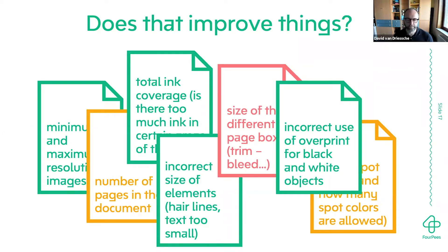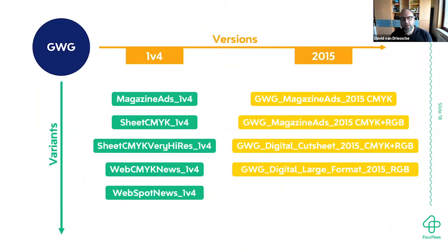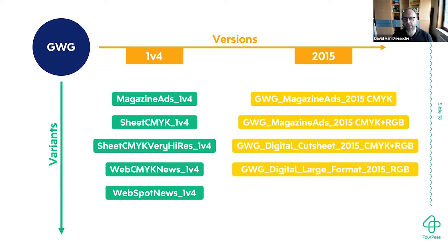Just as PDF/X has many different versions, so does the Ghent Workgroup specification — and it's actually more complex because there are different versions AND different flavors for different market segments. There are really only two versions you should remember, and probably only one: 2015. You have different specifications per market segment — for example, 'Magazine Ads 1v4' means version 1v4, specifically for advertisements in magazines. Just use the 2015 version — everyone understands that was released in 2015.